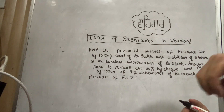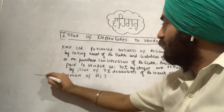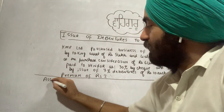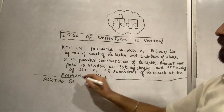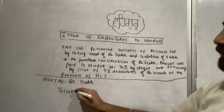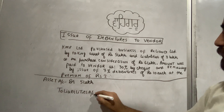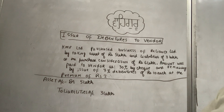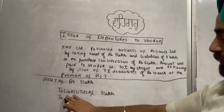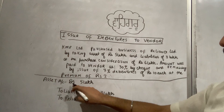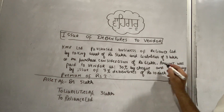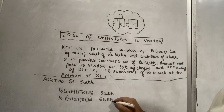When you see this question, you will need to make 2 entries. For the first entry: KMP Limited is taking over the business of Reliance Limited. What is coming in? Assets are coming in — so Asset Account is debited. How much is the asset? 5 lakh. Liabilities are always credited to the Liabilities Account — 3 lakh. Purchase consideration: the seller, Reliance Limited, is credited — Reliance Limited Account 6 lakh.